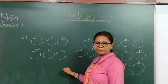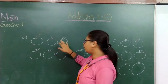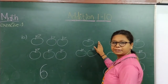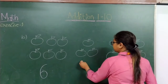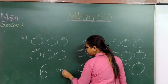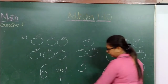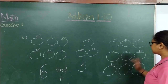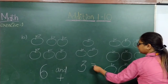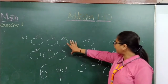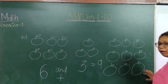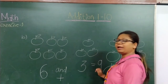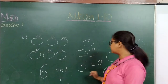Coming to the next sum. How many apples can you see here? 1, 2, 3, 4, 5 and 6 — so 6 apples over here. How many apples over here? 1, 2 and 3 — so 3 apples over here. So now 6 plus 3 makes it 1, 2, 3, 4, 5, 6, 7, 8, 9 — is equal to 9. I added 6 apples and 3 apples, which makes 9 apples. So 6 and 3 when added together makes the answer 9. Or 6 plus 3 is equal to 9.